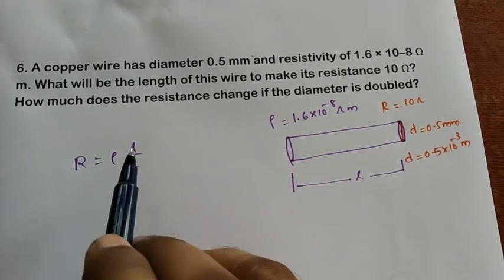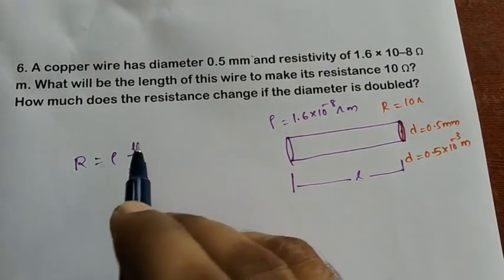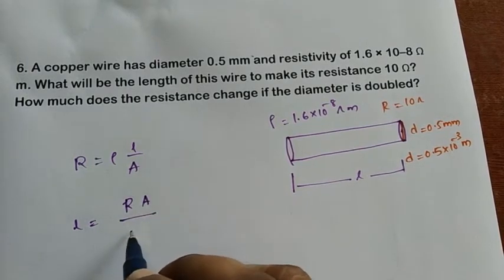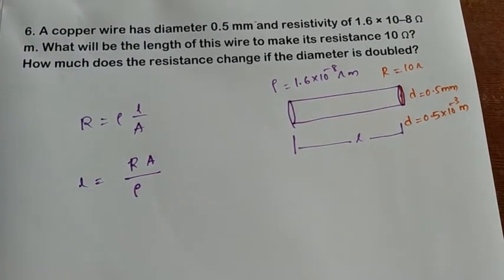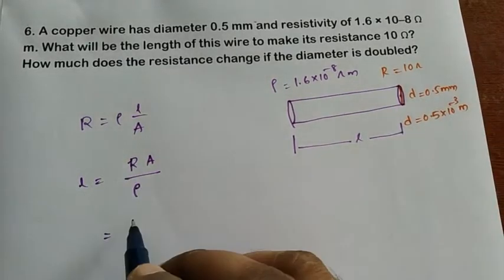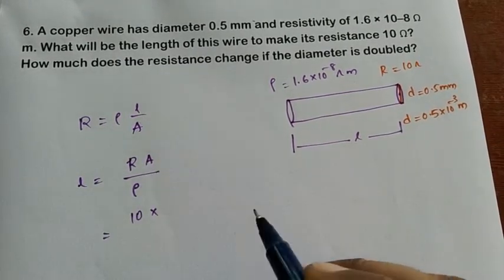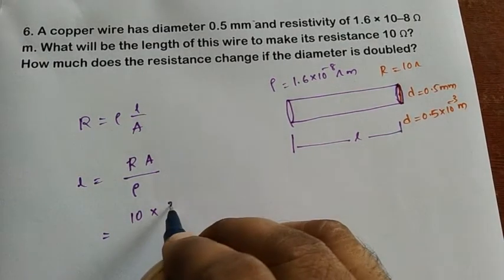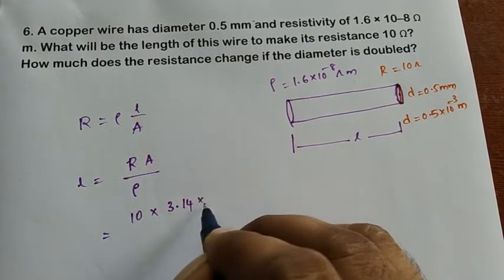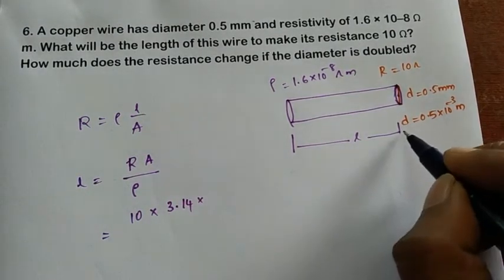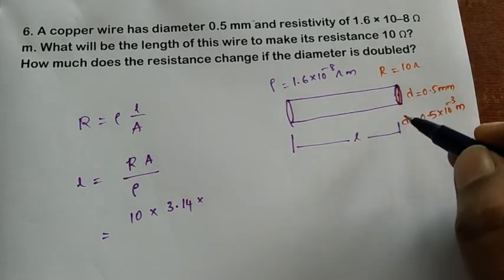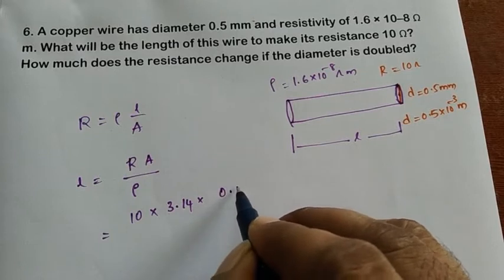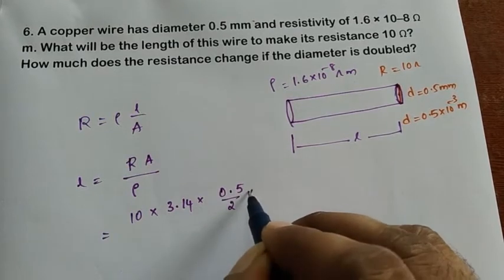We need to find length, so rearranging: L = R × A / ρ. The resistance is 10 ohms. The area is that of a circle, so A = πr². They have given diameter, not radius, so we take r = d/2 = 0.5/2 × 10⁻³ meters.